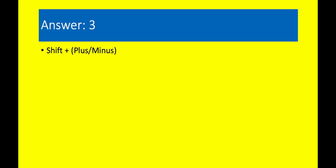Question 3. What is the shortcut to quickly cycle through blending modes in Photoshop? Answer 3. Shift plus or Shift minus.